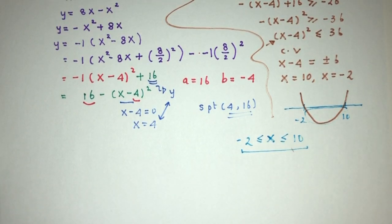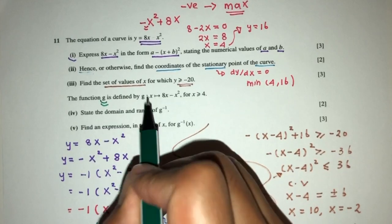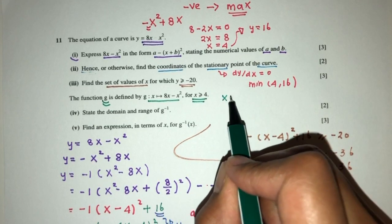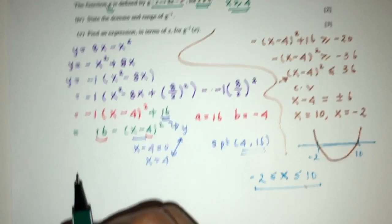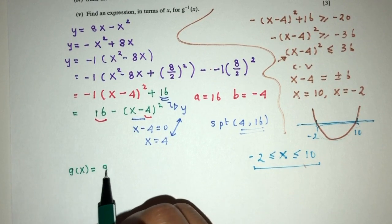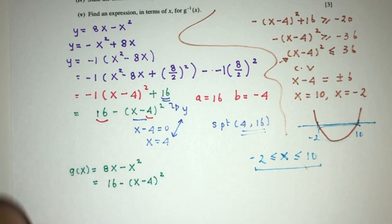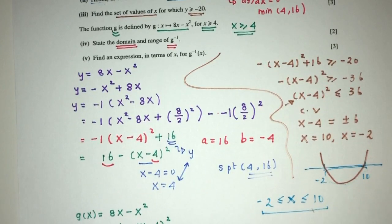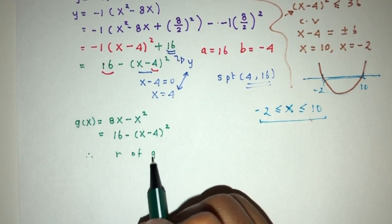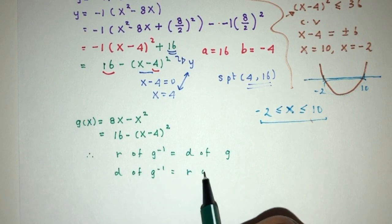Moving on — the function g is defined by g(x) = 8x - x² for x ≥ 4, which is the same equation as before, also written as 16 - (x - 4)² from part 1. We need to state the domain and range of g inverse. The key relationships are: the range of g⁻¹ equals the domain of g, and the domain of g⁻¹ equals the range of g.